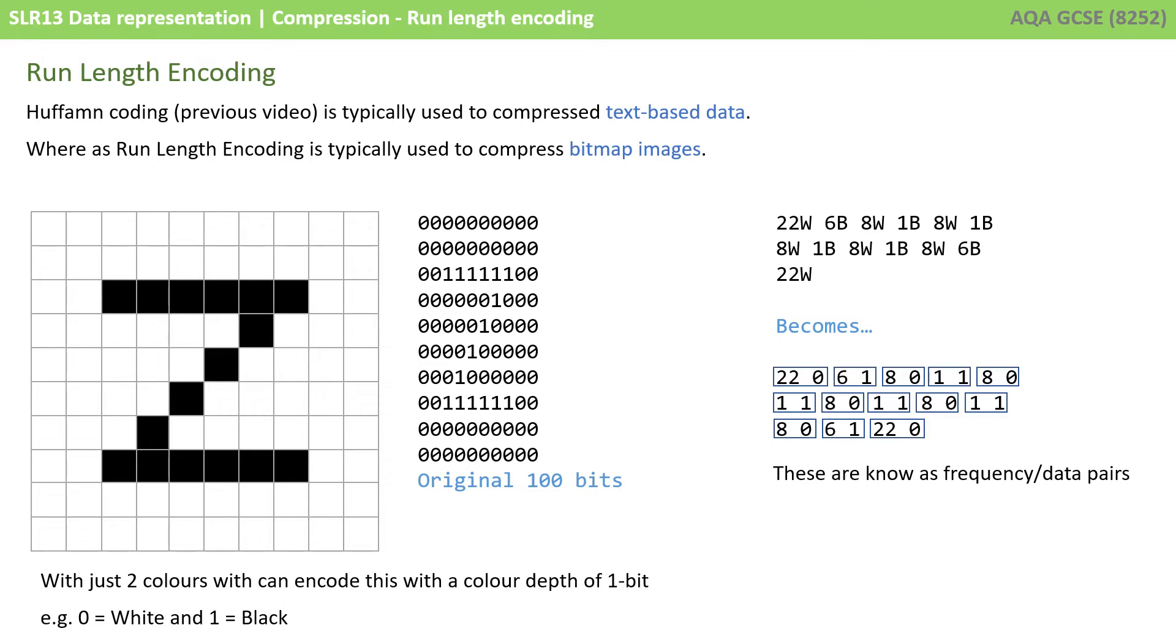We can translate that one step further into what are known as frequency data pairs. We have the number 22 and the number 0. 22 tells us how many pixels we're going to have, and the next number 0 tells us what colour, so 22 0s is 22 whites, 6 1 is then 6 blacks.